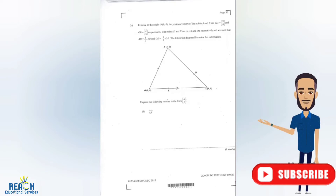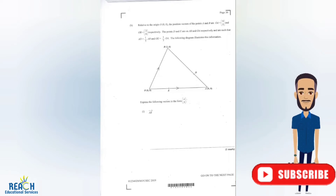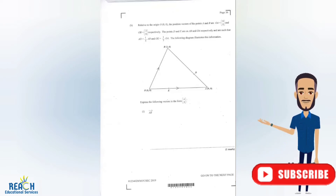We have the question and we have our triangle right here. What we'll be using to actually answer the question is what we call the triangular law. We'll always look for a triangle and go on from there. This one says we should express the following vectors in the form of a, b, which is a column vector.